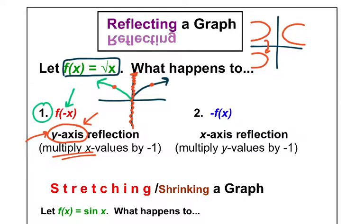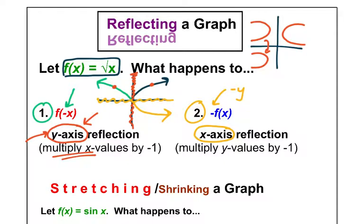Now we move to number two — notice the negative on the outside. Remember, f of x is just like y, so this is like writing negative y. You see how the negative is on the y — y becomes negative — it's an x-axis reflection. If the black graph was my original, I'm changing all the y's from positive to negative and vice versa, so it goes down here. If you're multiplying the y values by negative, it's an x-axis reflection.